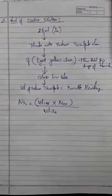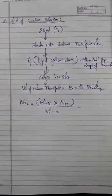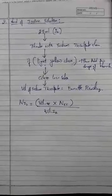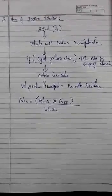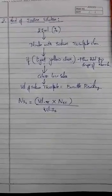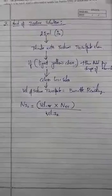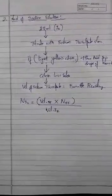Do this two times then take the average. The average is finalized as the volume of sodium thiosulfate.